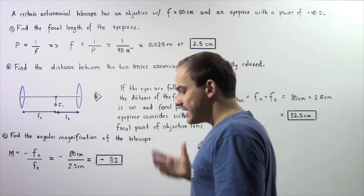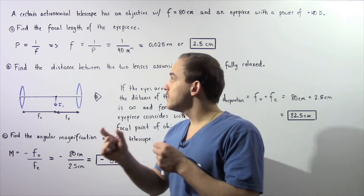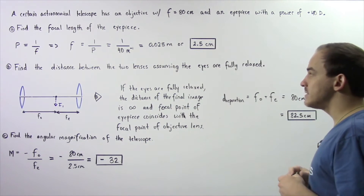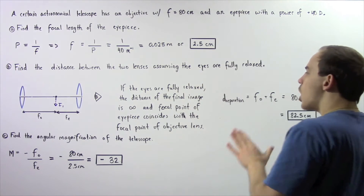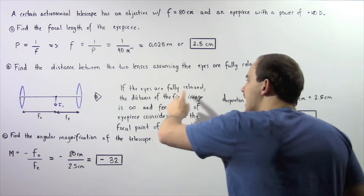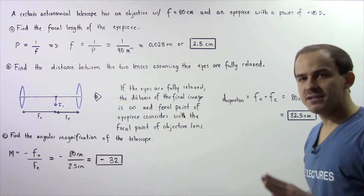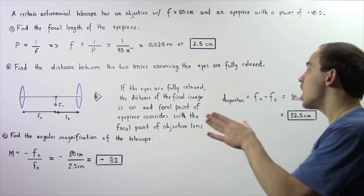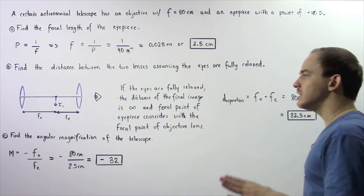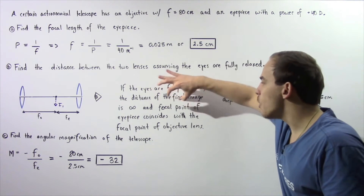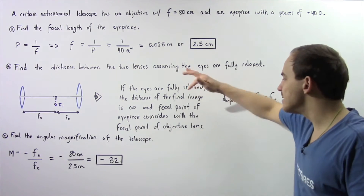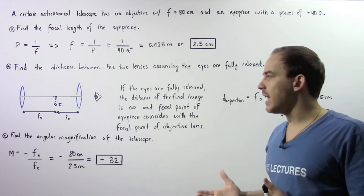Now let's move on to part B. We want to find the distance between the two lenses, the objective and the eyepiece lens, assuming that the eyes are fully relaxed. Remember, if the eyes are fully relaxed, that basically means that the distance of the final image from the lens is assumed to be infinitely large, and that implies that the focal point of the eyepiece exactly coincides with the focal point of the objective lens.